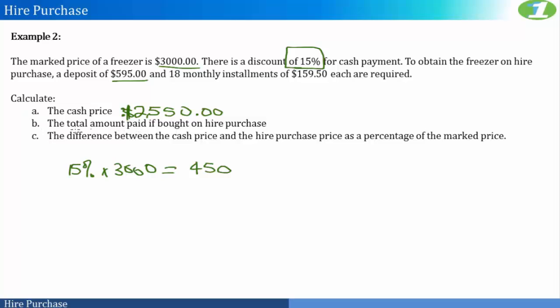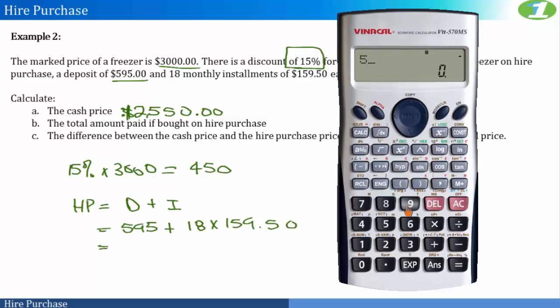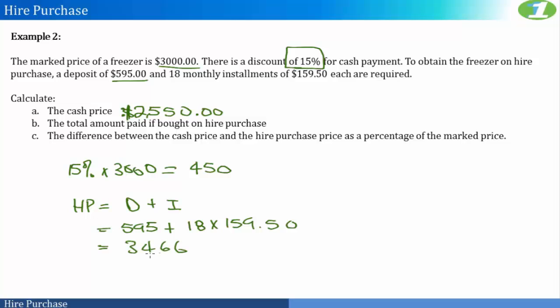Now, what about our hire purchase price? So it says here what is the total amount paid if bought on hire purchase? Well, the hire purchase price we know is the deposit plus the installments. So our deposit is actually $595, plus I would be making 18 monthly installments of $159.50. So let's see what this works out to be. This gives us $595 plus 18 times $159.50, which is $3,466. So this is our hire purchase price.